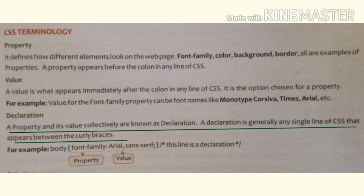A declaration is always saved inside curly braces. For example, here we can see: body, then curly braces open, then font-family: Arial, sans-serif. So here the font family and its value are applied — this line is the declaration, because we have declared the font for the body here.